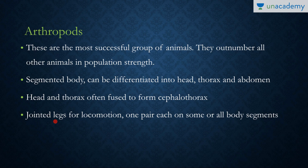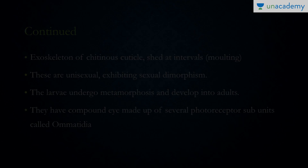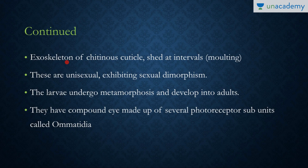The word arthropod means jointed legs — 'arthros' means jointed and 'pods' means leg. They have jointed legs for locomotion, mostly one pair on some or all body parts; some body parts may not have even a single pair of legs. The exoskeleton is made of chitin, which is shed at intervals in a process known as molting.